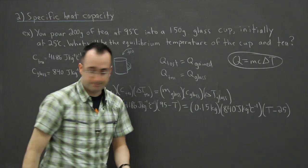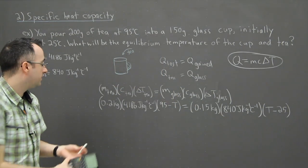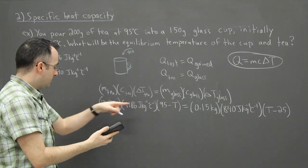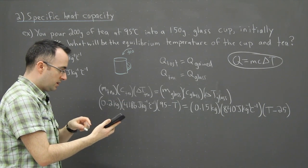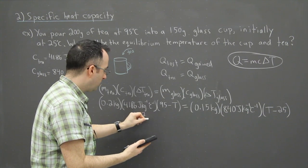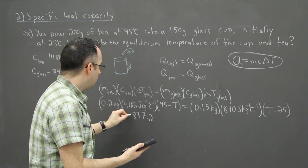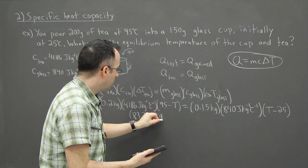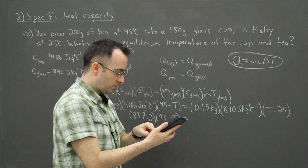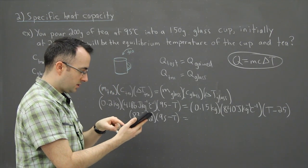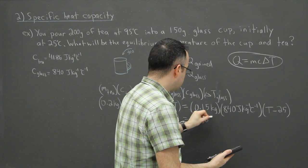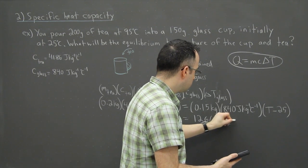Now it's just a matter of solving for T. I'm going to use my calculator. I'm going to figure out this right here: 4186 times 0.2, that's 837.2, and that's going to be times 95 minus T. That's going to be equal to 0.15 times 840. So that magic number is going to be 126 times T minus 25.